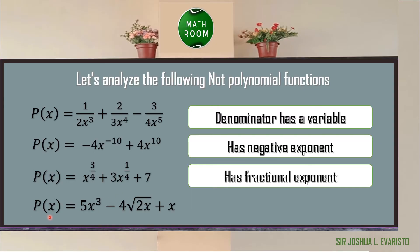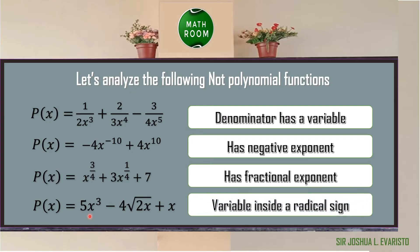For the last number, p(x) = 5x³ − 4√(2x) + x. This is not a polynomial function since we have a variable inside a radical sign. Therefore, a polynomial function does not have any variable in the denominator, does not have a negative exponent, does not have a fractional exponent, and does not have any variable inside a radical sign.